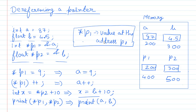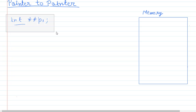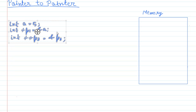The next topic is pointer to pointer. You can use a pointer to point to another pointer. Since a pointer is a variable that takes up space in memory, it also has an address, so we can store that address in another pointer variable. To declare a pointer to pointer, we use two stars in front of the variable name — this means it's a pointer pointing to another pointer, which in turn points to an int.